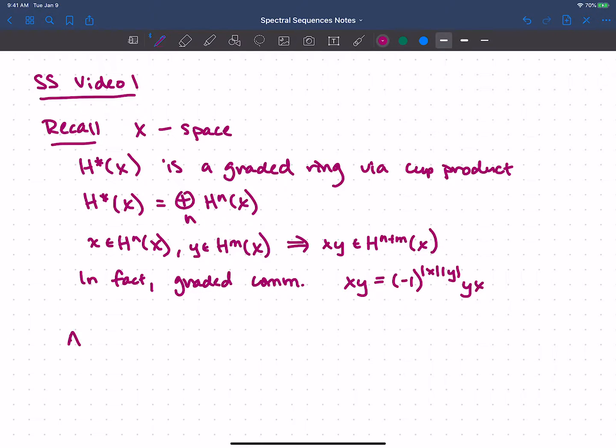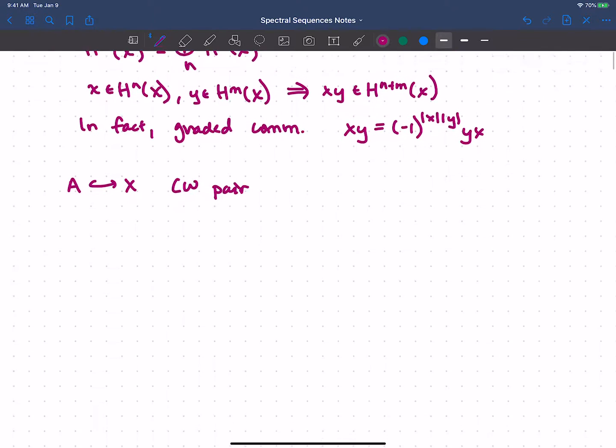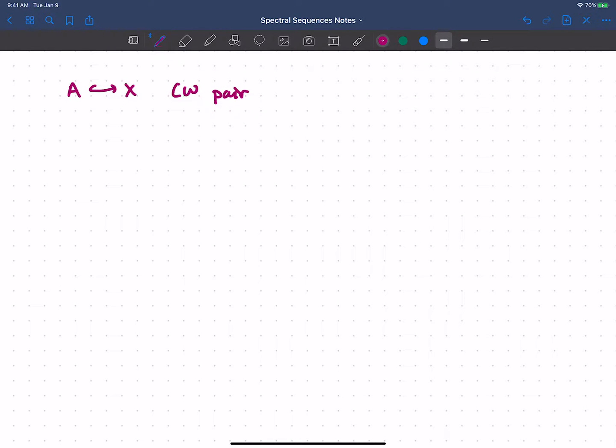So now if A lives inside X, and let's just say this is a CW pair, really I just need a good pair, then that's going to give me a short exact sequence of chain complexes. So I could take the singular chains on A, and that maps to the singular chains on X, maps to the singular chains on X relative to A. And here we can just take that to be defined to be the chains on X mod the chains on A.